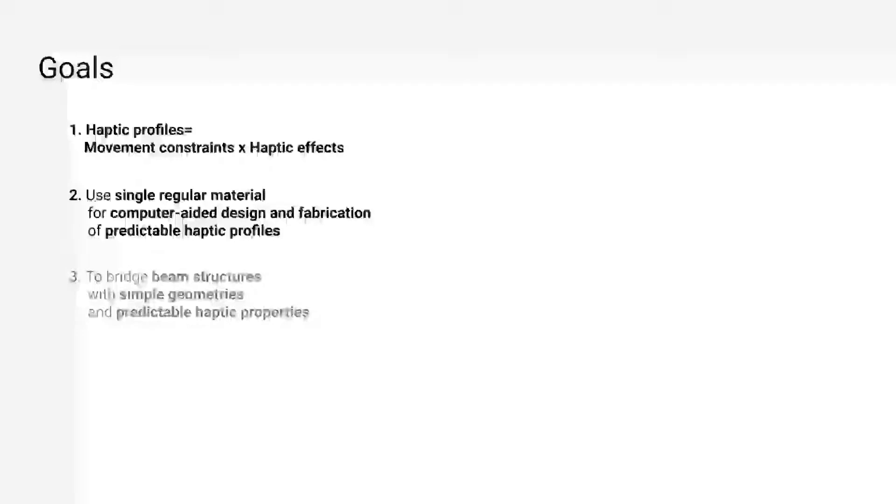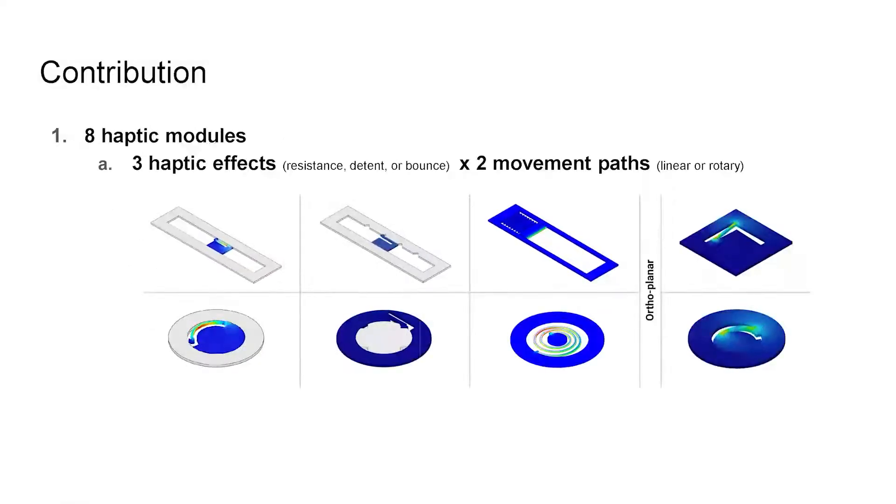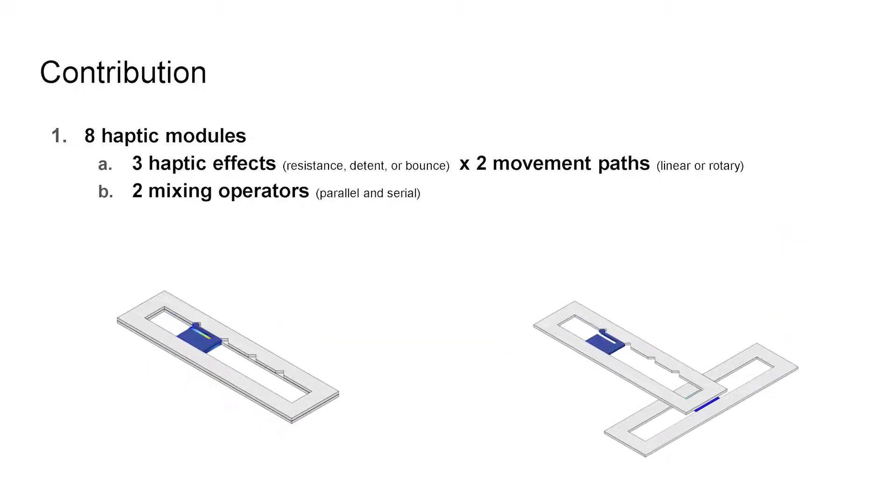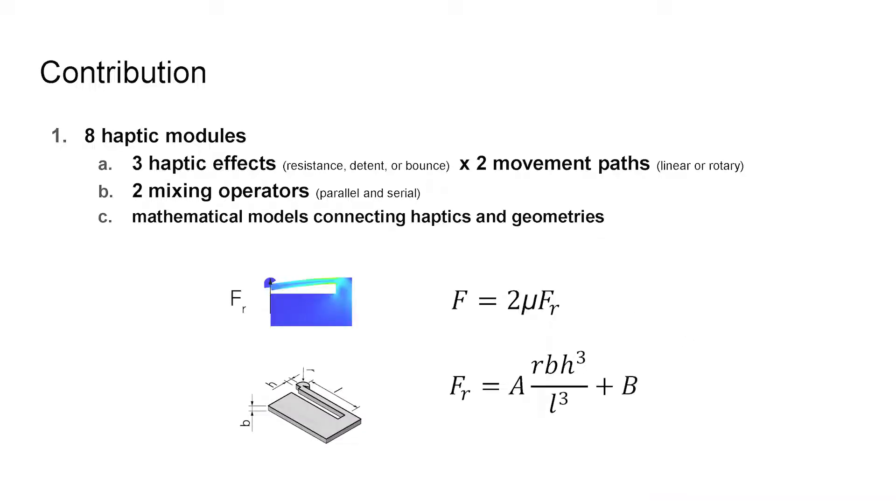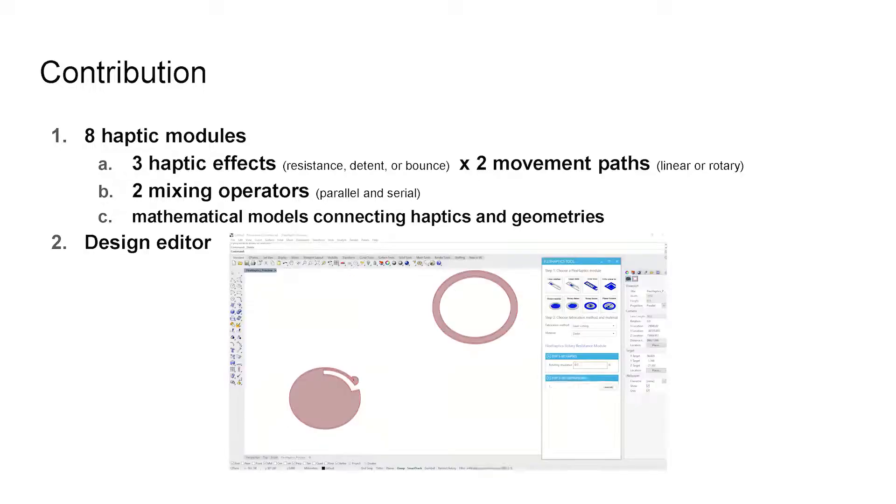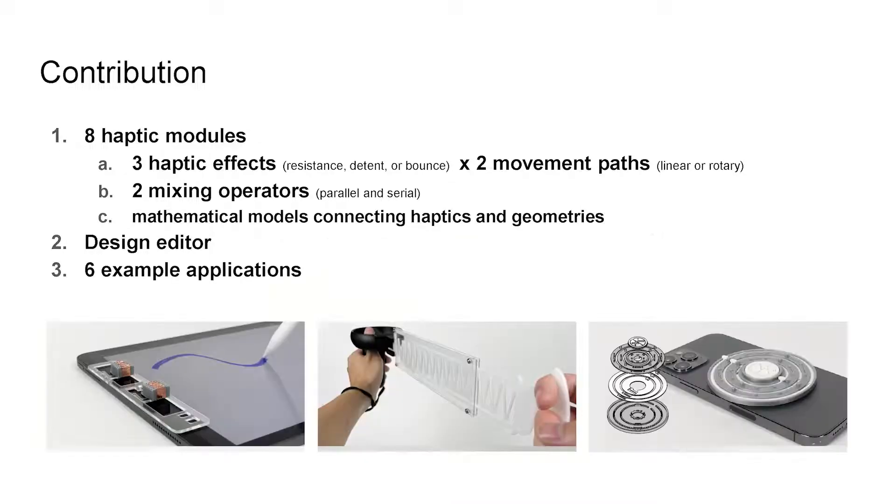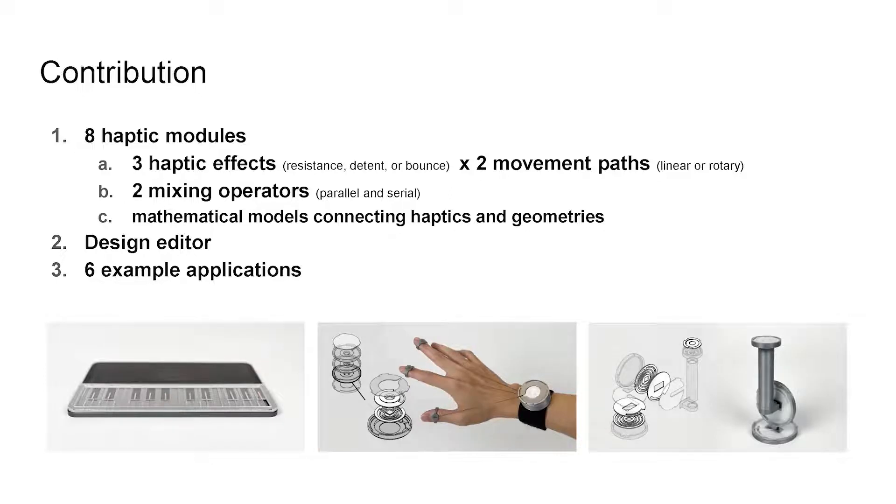With this study, we present the design of eight haptic modules. They support resistance, detent, and bounce haptic effects within linear and rotary paths. They can work alone or combine for compound movement paths and haptic effects. They come with mathematical models connecting haptic properties and geometric parameters of the modules. Also, we developed a design editor that transforms haptic properties into module geometries. Finally, we demonstrate a broad spectrum of use cases applying the proposed method and tool.